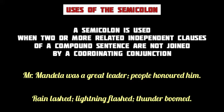For example: 'Mr. Mandela was a great leader; people honored him.' In this sentence, the two independent clauses — 'Mr. Mandela was a great leader' and 'people honored him' — are joined with a semicolon because there is no coordinating conjunction. Another example: 'Rain lashed; lightning flashed; thunder boomed.' Here we have three sequential related independent clauses joined with two semicolons instead of coordinating conjunctions.